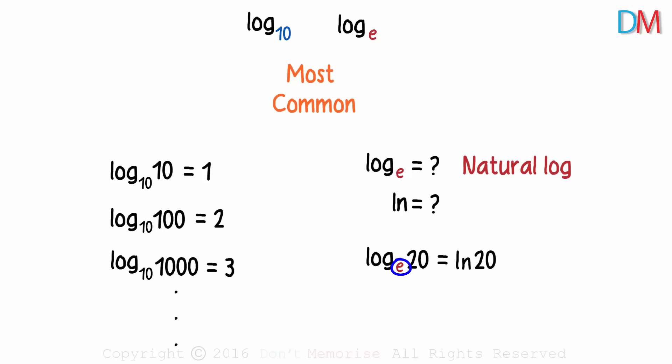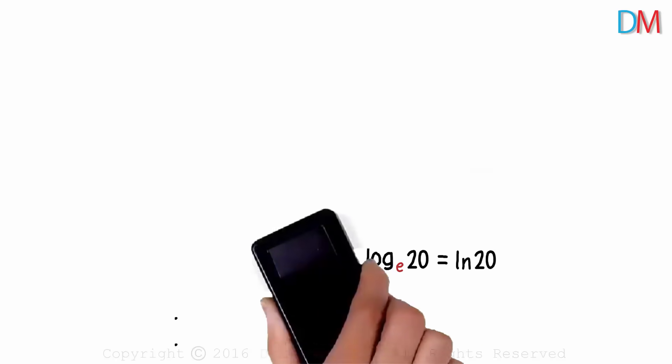What is this E? Some call it a magical number. Some call it an irrational constant. Some call it Euler's number. But the harsh truth is this: very few people actually understand what E is. To get to E, we first need to understand growth.